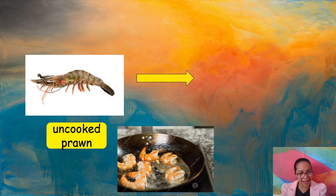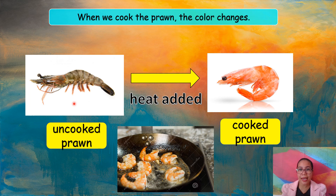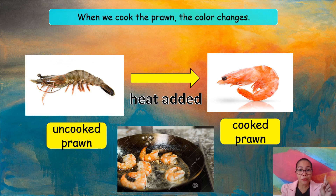Students, this is a prawn. It's not cooked yet. But when heat is added, you cook it. Look at the color — it becomes orange. When we cook the prawn, the color changes.